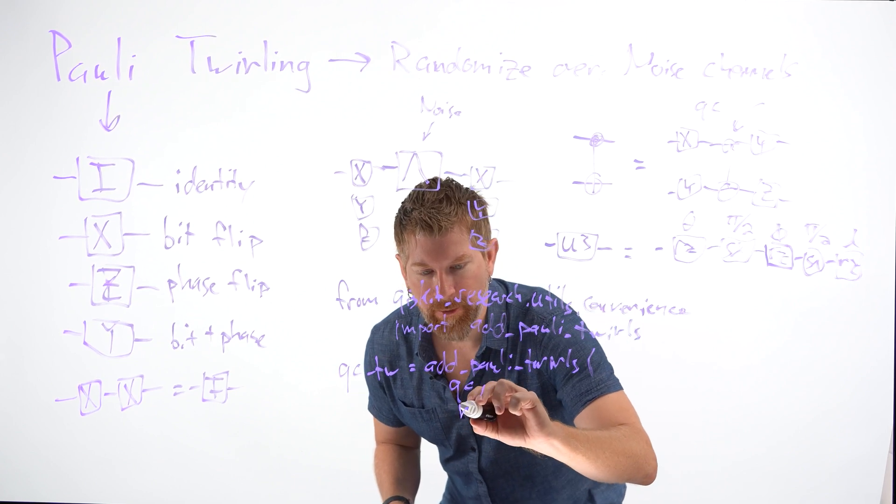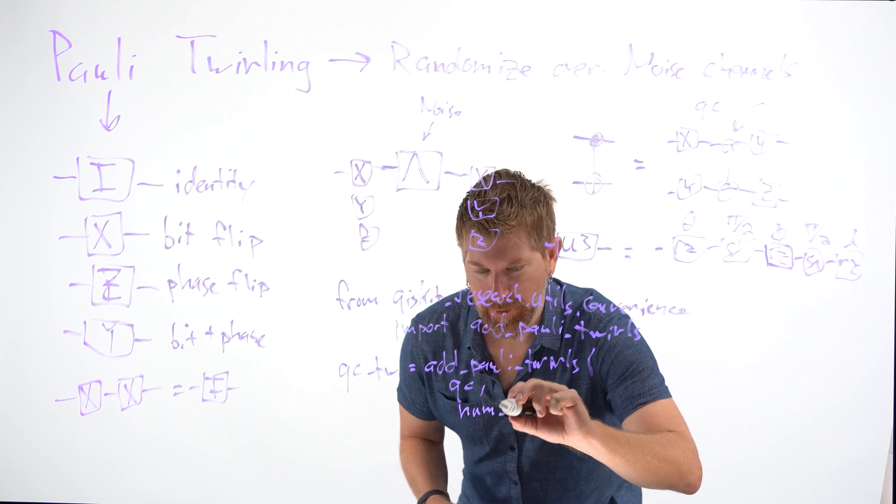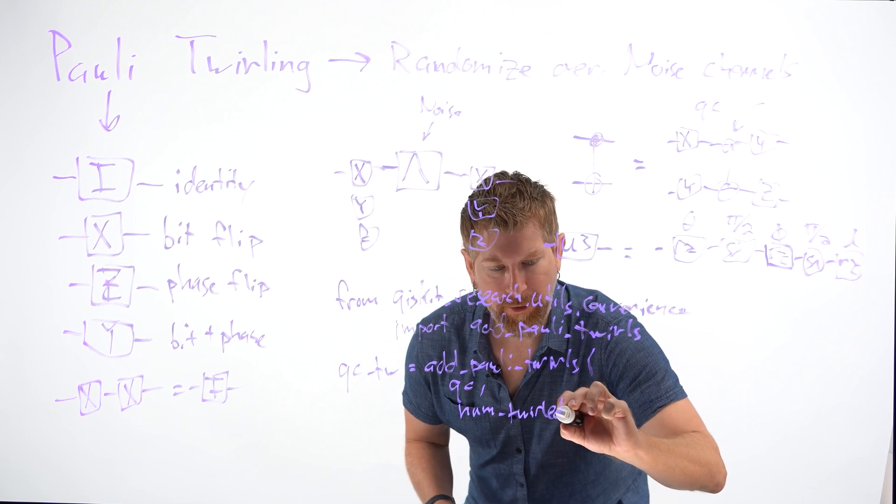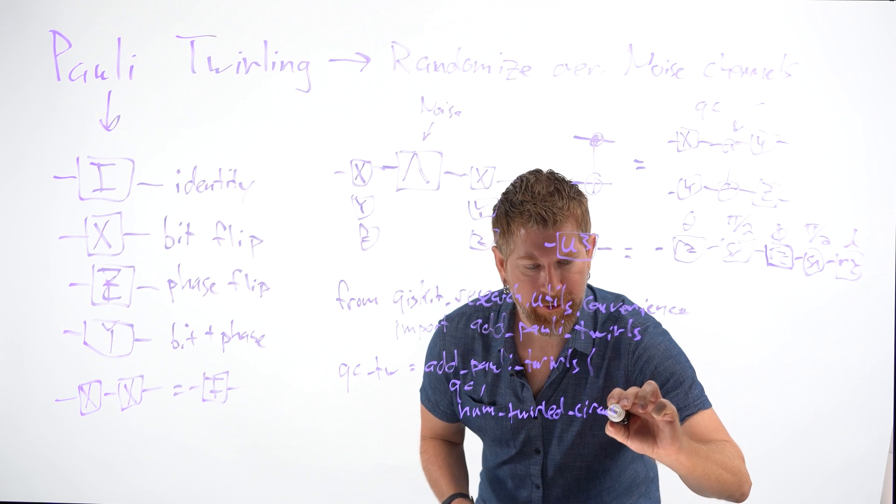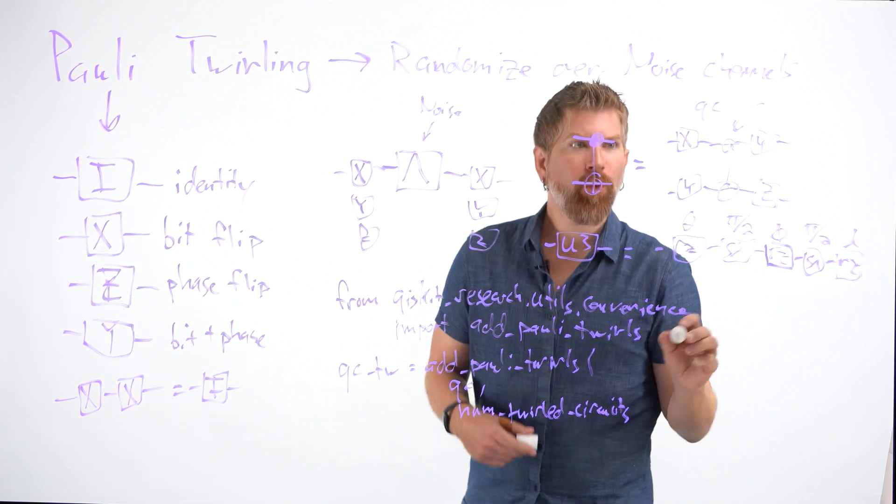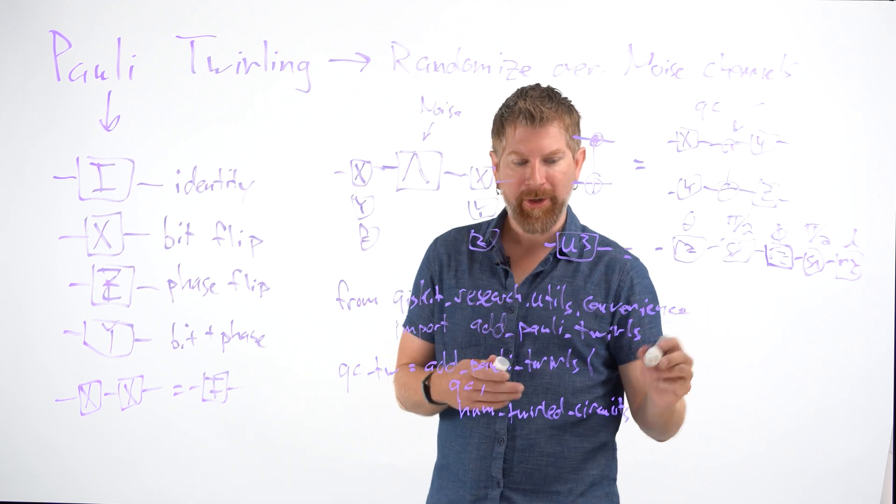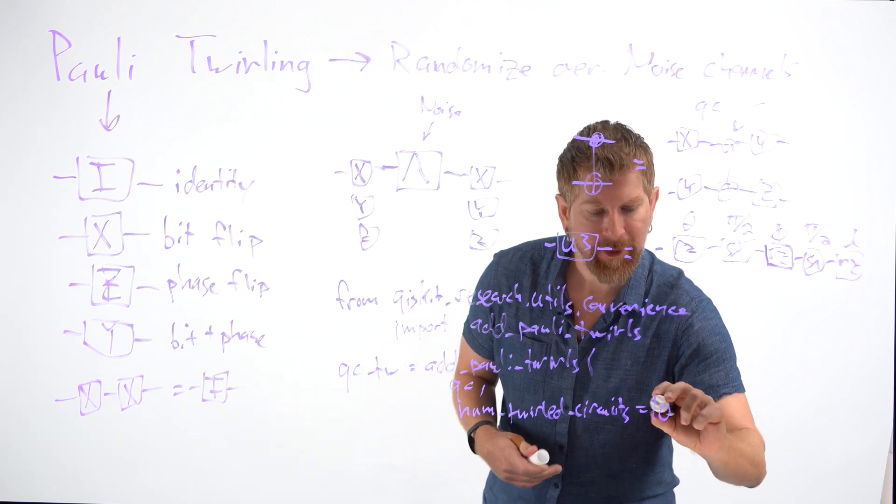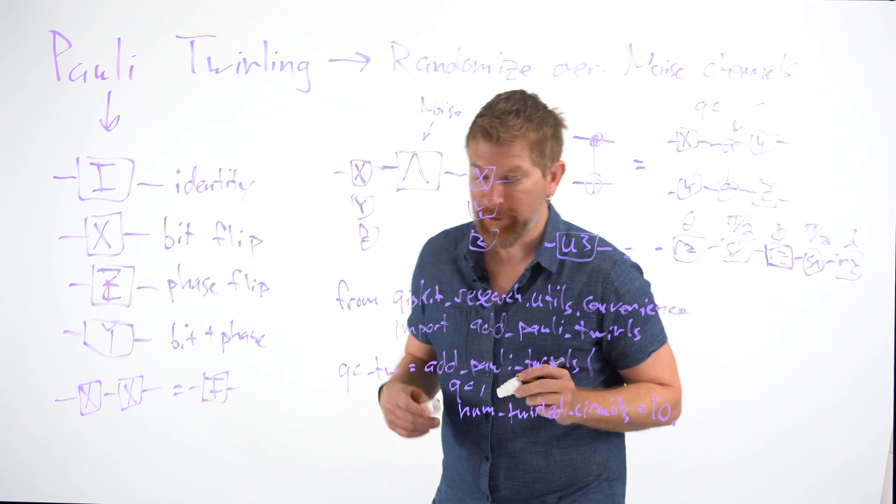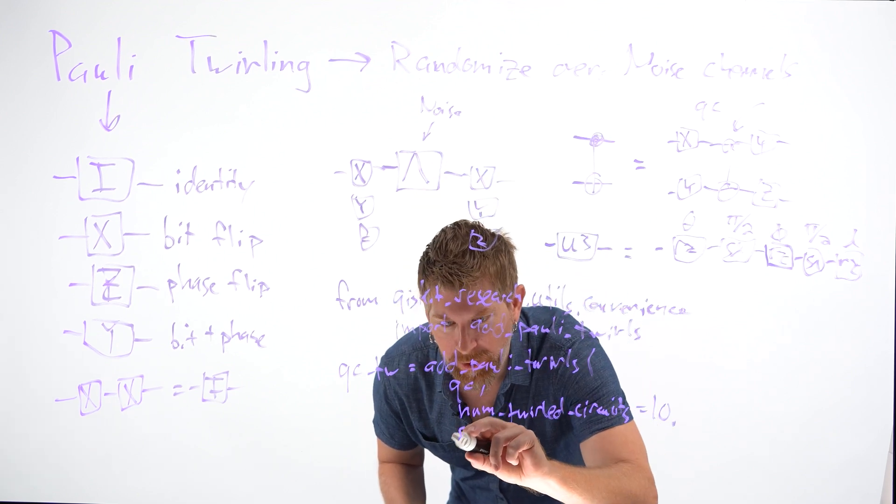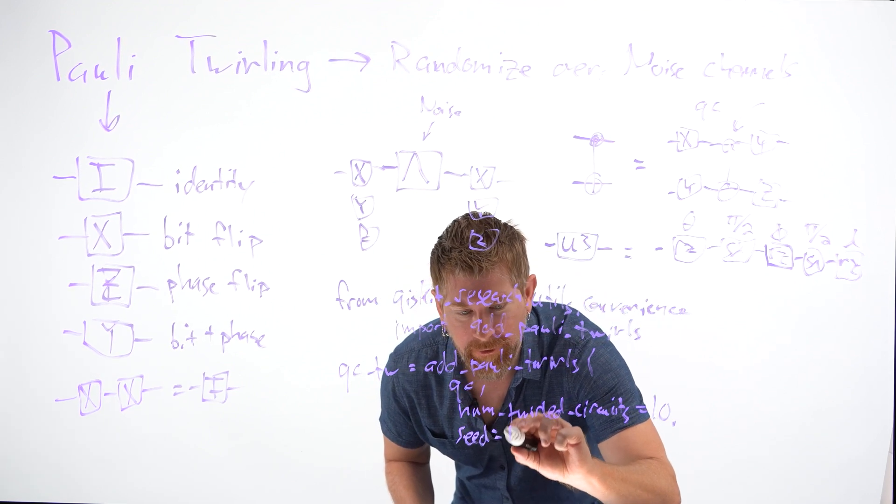We'll put the number of twirled circuits, which gives us the number of how many averages of these circuits we want to build up that we can average over. We can say like 10 has kind of been shown to be effective. We can see the randomization, for example.